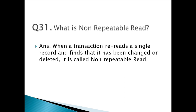For example: transaction 1 selects information about the book 'Effective Java'. In the meantime, transaction 2 changes the price of the book. Then transaction 1 reads the Effective Java details again, and it sees that the price is now different.